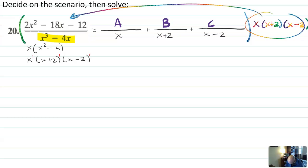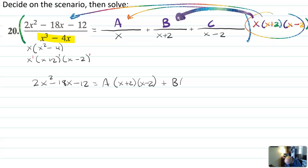When you bring that over to the first term, everything will cancel, and you'll just get two x squared minus 18x minus 12. Bring it over to the second term. The x will cancel, and everything else will stay, so I'll get a, x plus two, x minus two. Bringing it to the third term, the x plus two will cancel, but I'll have b, x, x minus two. And bringing it to the last term, the x minus two will cancel, and you'll have c, x, x plus two.